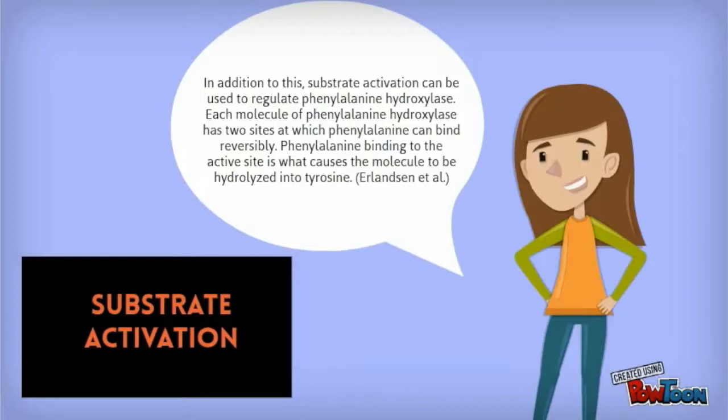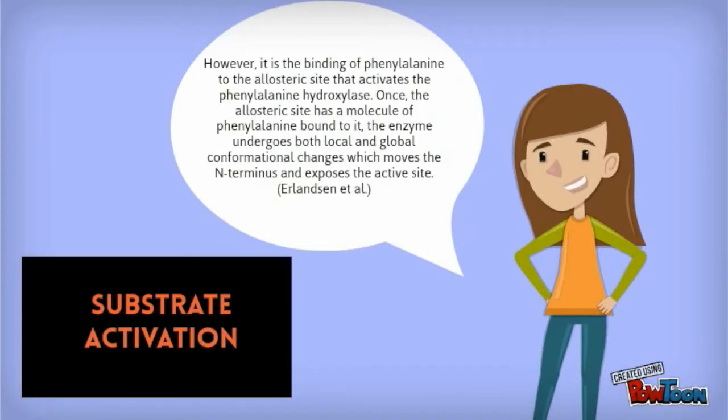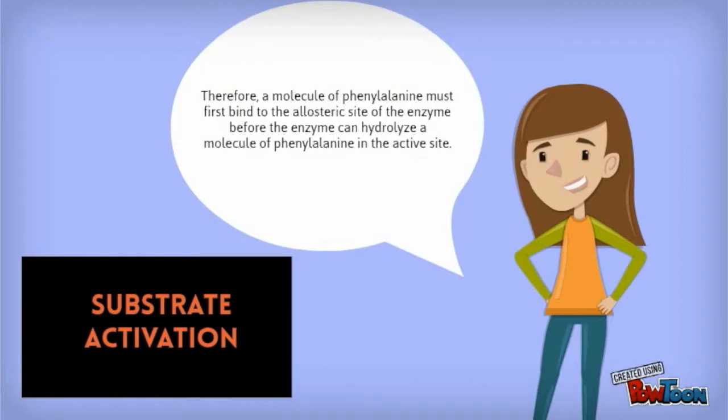In addition to this, substrate activation can be used to regulate phenylalanine hydroxylase. Each molecule of phenylalanine hydroxylase has two sites at which phenylalanine can bind reversibly. Phenylalanine binding to the active site is what causes the molecule to be hydrolyzed into tyrosine. However, it is the binding of phenylalanine to the allosteric site that activates the phenylalanine hydroxylase. Once the allosteric site has a molecule of phenylalanine bound to it, the enzyme undergoes both local and global conformational changes, which moves the N-terminus and exposes the active site. Therefore, a molecule of phenylalanine must first bind to the allosteric site of the enzyme before the enzyme can hydrolyze a molecule of phenylalanine in the active site.